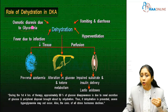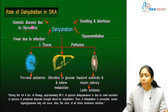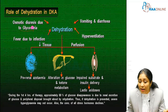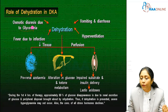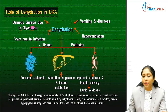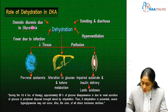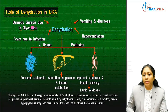As dehydration worsens, the patient may slip into pre-renal azotemia, with alterations in glucose and ketone metabolism, impaired substrate and insulin delivery, leading to lactic acidosis. Importantly, during the first four hours of therapy, approximately 80% of glucose disappearance is due to renal excretion and peripheral disposal brought about by rehydration. Therefore, if dehydration is prevented, severe hyperglycemia may not occur, and stress hormone concentrations tend to decline when dehydration is corrected.